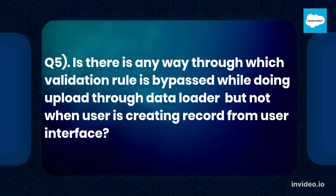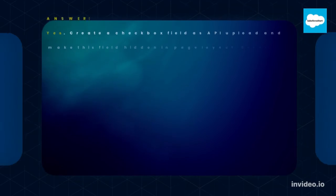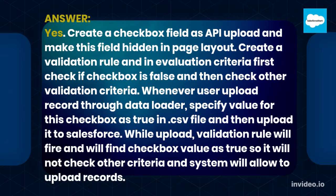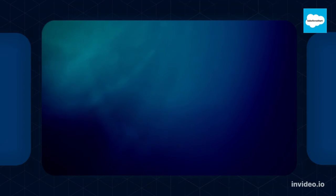Q5. Is there any way to bypass a validation rule when uploading through Data Loader but not when a user is creating a record from the user interface? Yes. Create a checkbox field called 'API Upload' and make it hidden in the page layout. Create a validation rule where the evaluation criteria first checks if the checkbox is false, then checks other validation criteria. Whenever a user uploads records through Data Loader, specify this checkbox as true in the CSV file. The validation rule will find the checkbox value as true and will not check other criteria, allowing the records to upload.